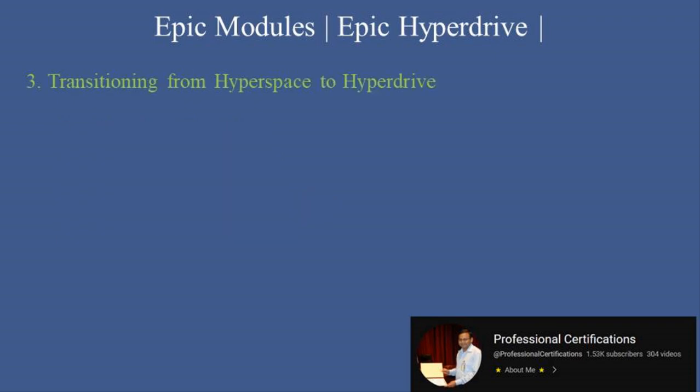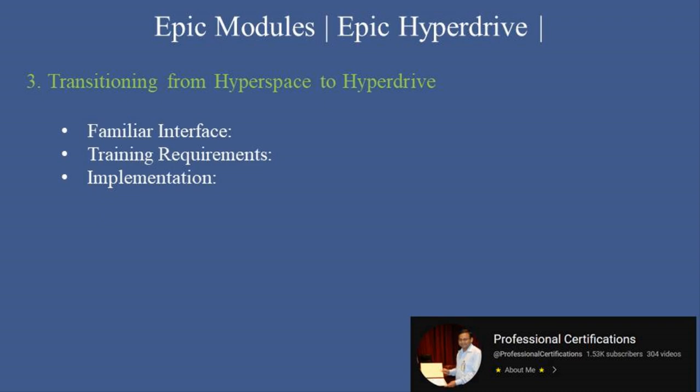Transitioning from Hyperspace to Hyperdrive is a significant change for organizations. While the backend is web-based, the user interface retains the look and feel of Hyperspace, minimizing the learning curve. Most users will need minimal training to adapt, but IT teams should focus on understanding web-based configurations. The transition typically involves IT teams working with Epic to configure the web-based environment and migrate data. Benefits include reduced hardware dependency and support for a more mobile workforce.